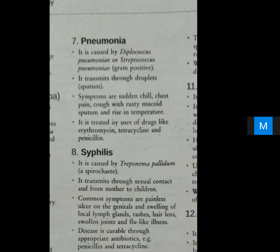Symptoms of pneumonia include sudden chills, chest pain, cough with rusty mucoid sputum, and rise in temperature. It is treated with drugs like erythromycin, tetracycline, and penicillin — antibiotics that can cure this disease.